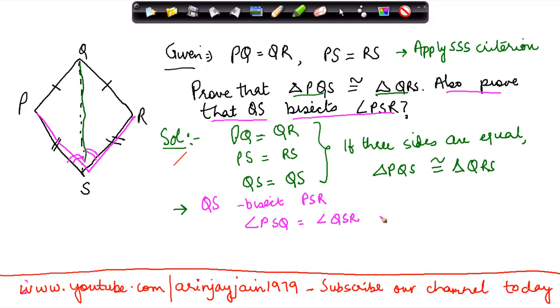Now by first property we know that triangle PQS, which is this triangle, is congruent to triangle QRS, which is this part, right? Now if that be the case, then the corresponding angles have to be equal, right?